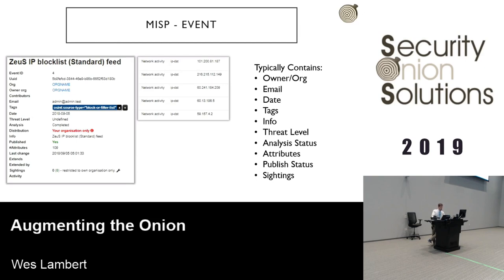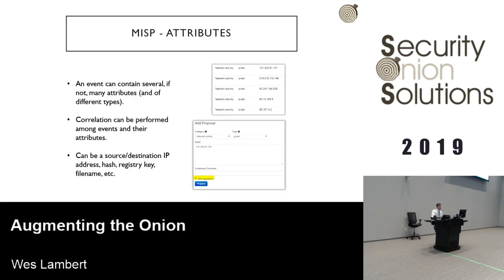A core component of MISP is the concept of an event. It typically contains information about the organization sharing the event, details like email, threat level, and analysis status. There are also attributes associated with the event — indicators that represent network activity, like an IP address, a domain name, a hash, or something of that nature. An event can contain several attributes, and correlation can be performed within MISP and within other mechanisms like The Hive or even Security Onion, to get more context around the data and feed that detection pipeline.